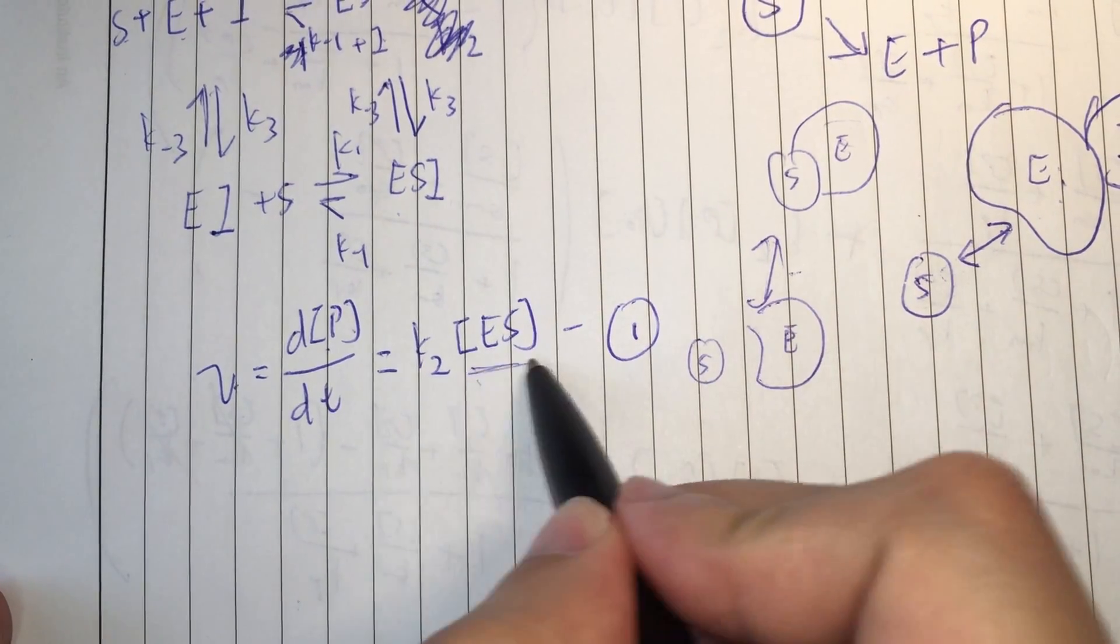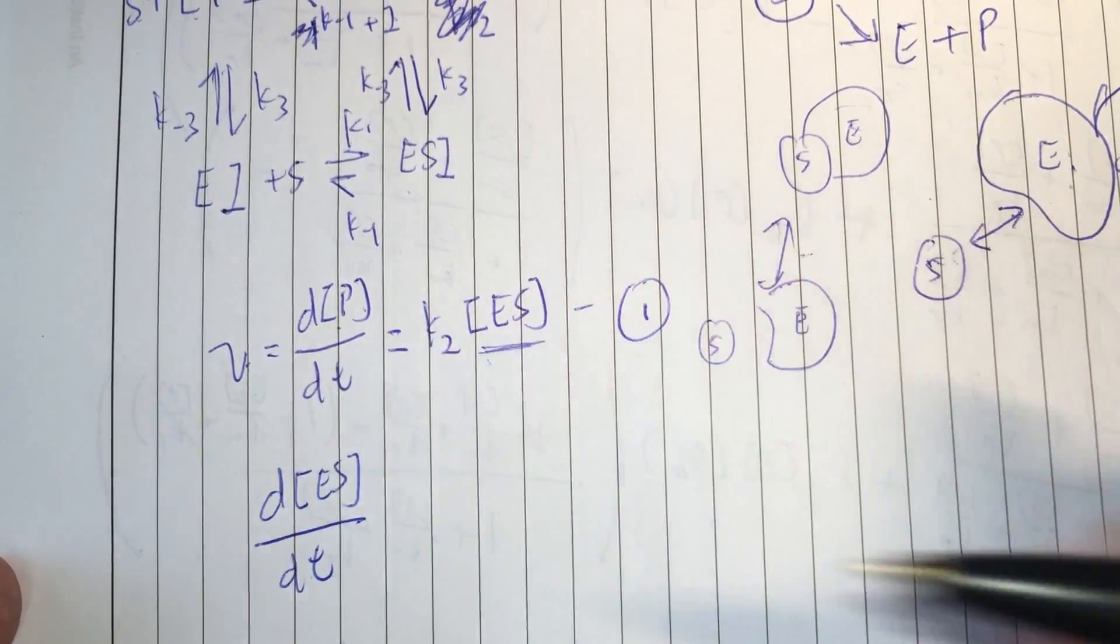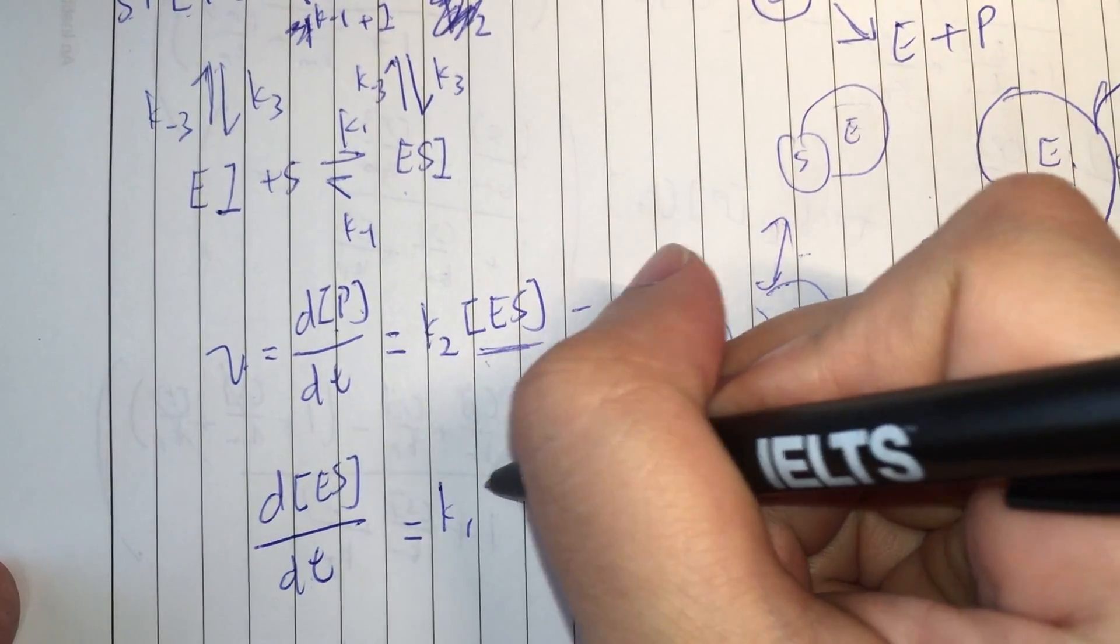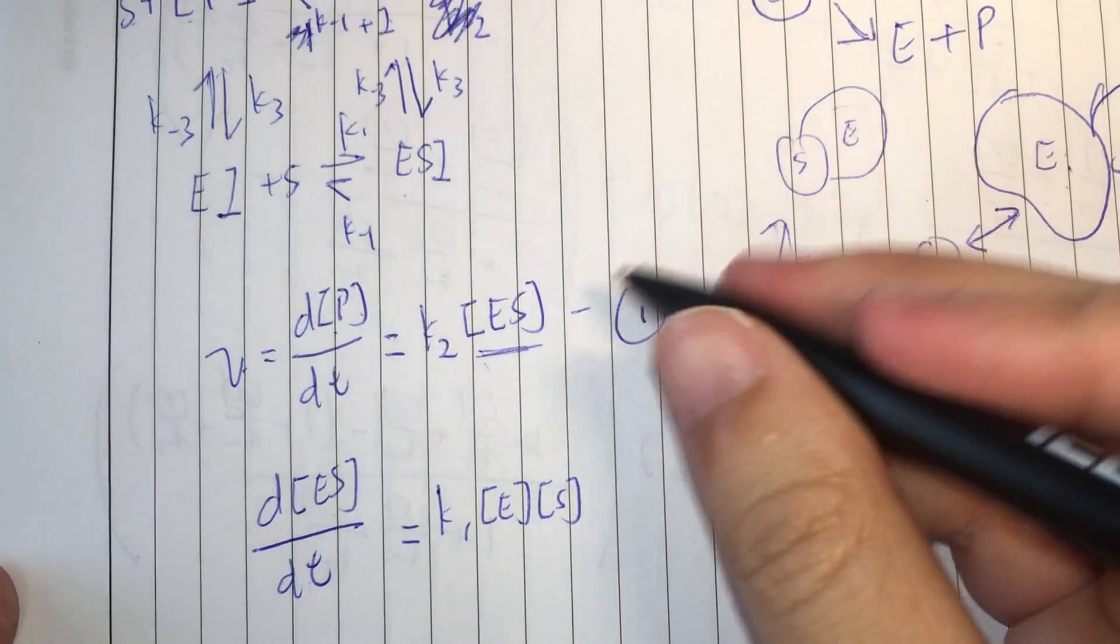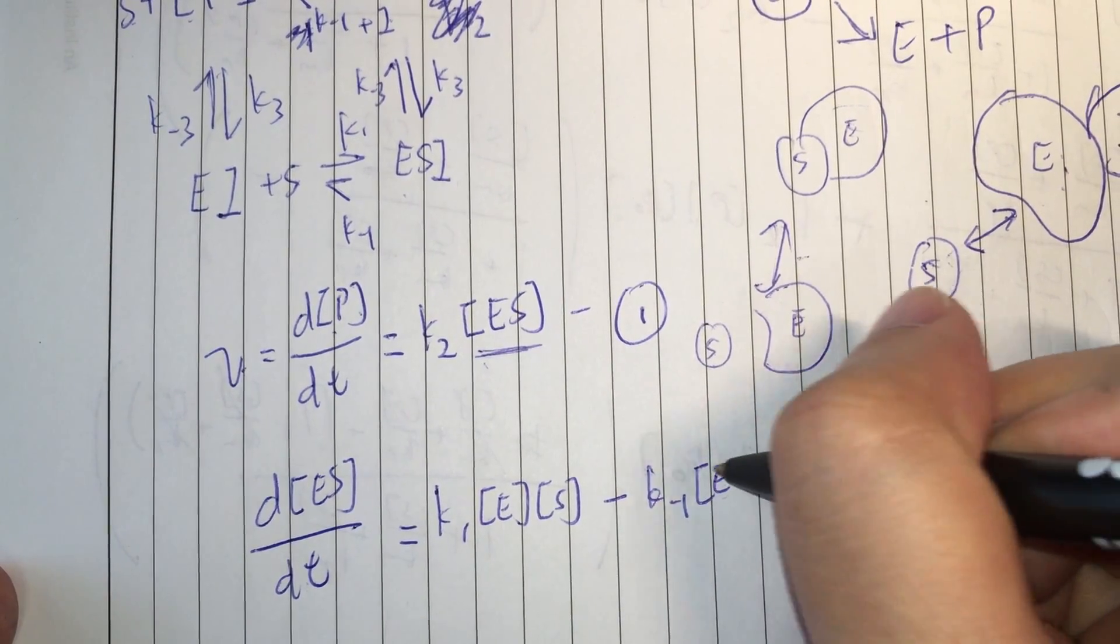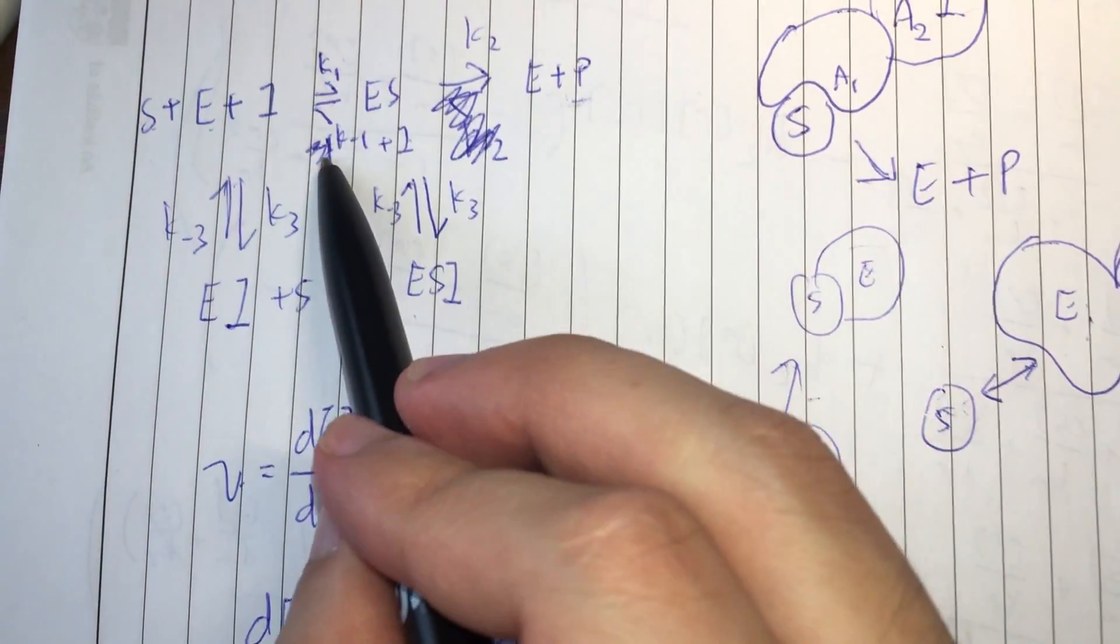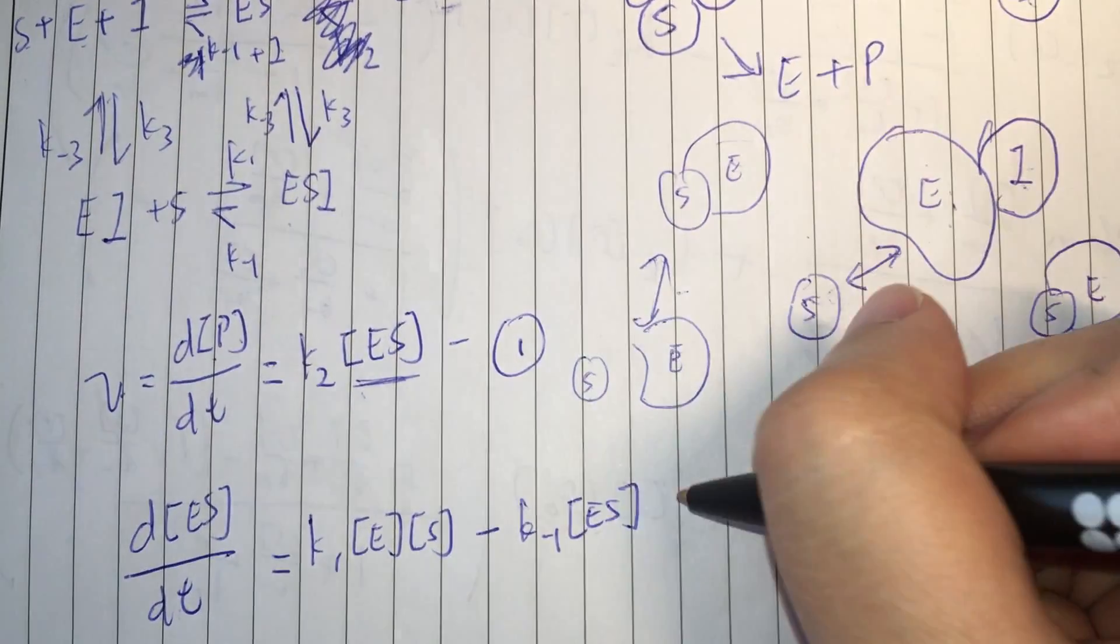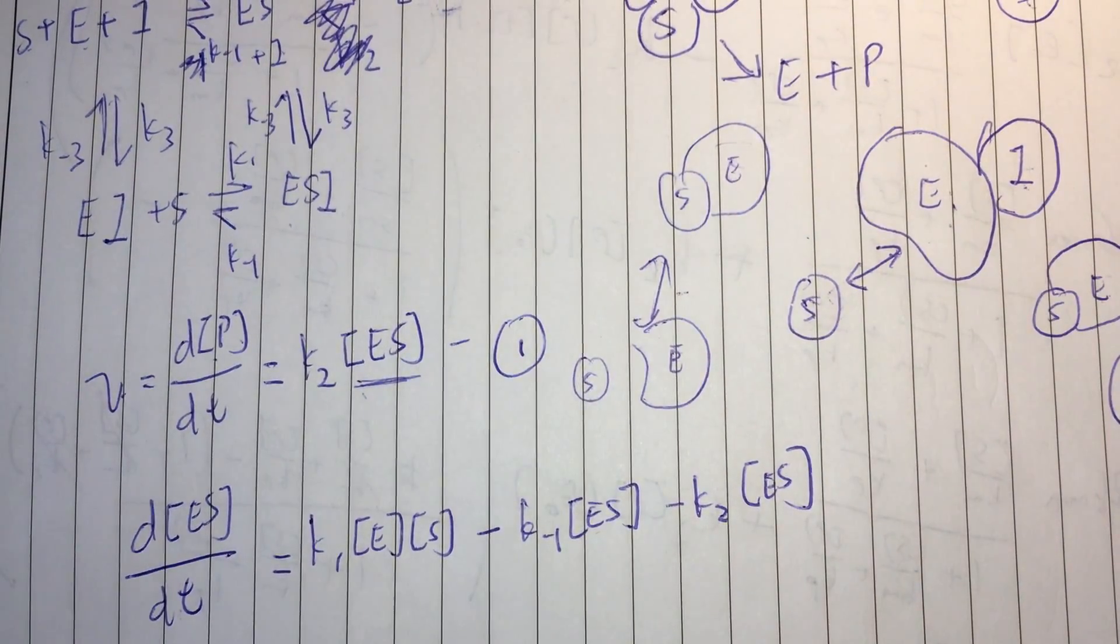Which is, how does this change with respect to time? So, let's do a balance over species ES. So, let's consider the inflows. So, we have K1 E and S minus K minus 1 into ES. So, we have accounted for the forward and backward reaction here. Now, let's account for the forward reaction here. So, I'm going to put minus K2 into ES. And that is done.